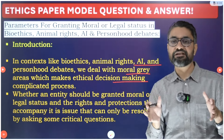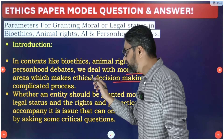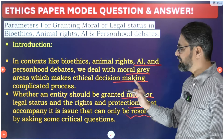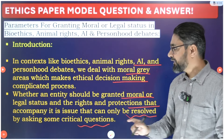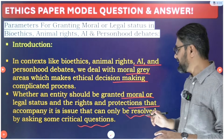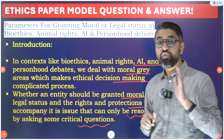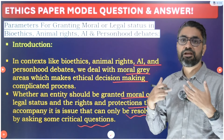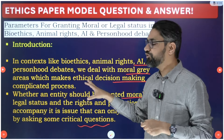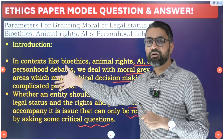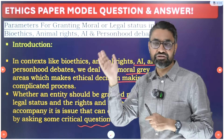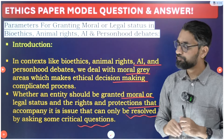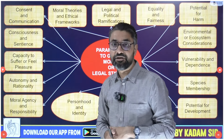Whether we allow euthanasia or not, a lot of moral gray areas are created. To navigate them safely, we need to fix some parameters of moral and ethical judgment. Whether an entity should be granted moral or legal status - and the rights and protections that accompany it - is an issue that can only be resolved by asking some critical questions. By answering those critical questions we can navigate those gray areas.